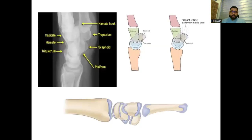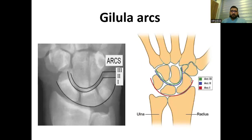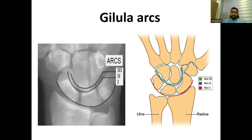These are the lateral radiographs of the wrist joint, showing all of the bones and their relationship to each other. These are the Gilula arcs. The concept of this arc is to understand the normal anatomy and restoration of the anatomy of the wrist. If these arcs are intact, then the x-rays of the wrist are normal. And if these arcs are disrupted, that means there is some dissociation or some problem in the wrist joint.